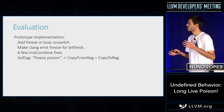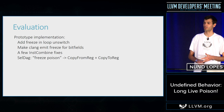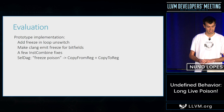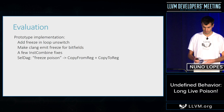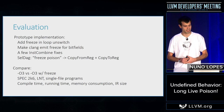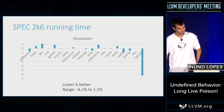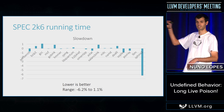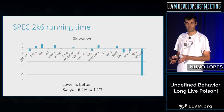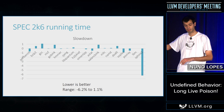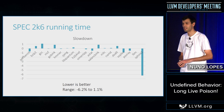Let's look at some numbers. We added freeze to loop unswitching, changed bit fields, made a few InstCombine fixes, added a few new optimizations like freeze-of-freeze equals freeze, and lowered freeze of poison with a hack of copy-from-reg/copy-to-reg to pin down one register per freeze. We then compared -O3 with -O3 with our implementation. On SPEC, the worst case is GCC where we get around 1% slowdown — I think because it has a lot of bit fields — and we get a weird 6% speedup on one benchmark that we didn't fully investigate.